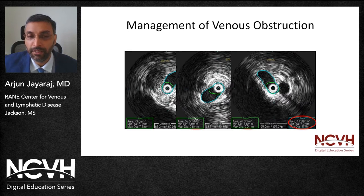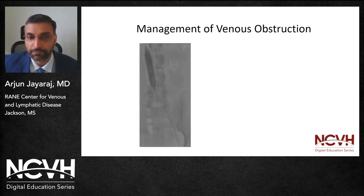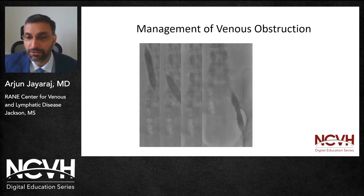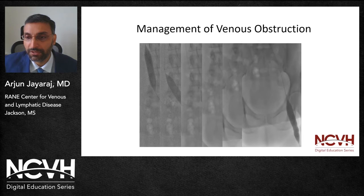As far as luminal areas go, we use 125, 150, and 200 millimeters squared as the cutoff points for the common femoral, external iliac, and common iliac veins respectively. Anything below this is considered stenotic. Angioplasty is carried out typically using 16 to 18 millimeter angioplasty balloons in a sequential fashion. You'll notice the distortion of the contours of the balloon suggestive of obstructive disease.